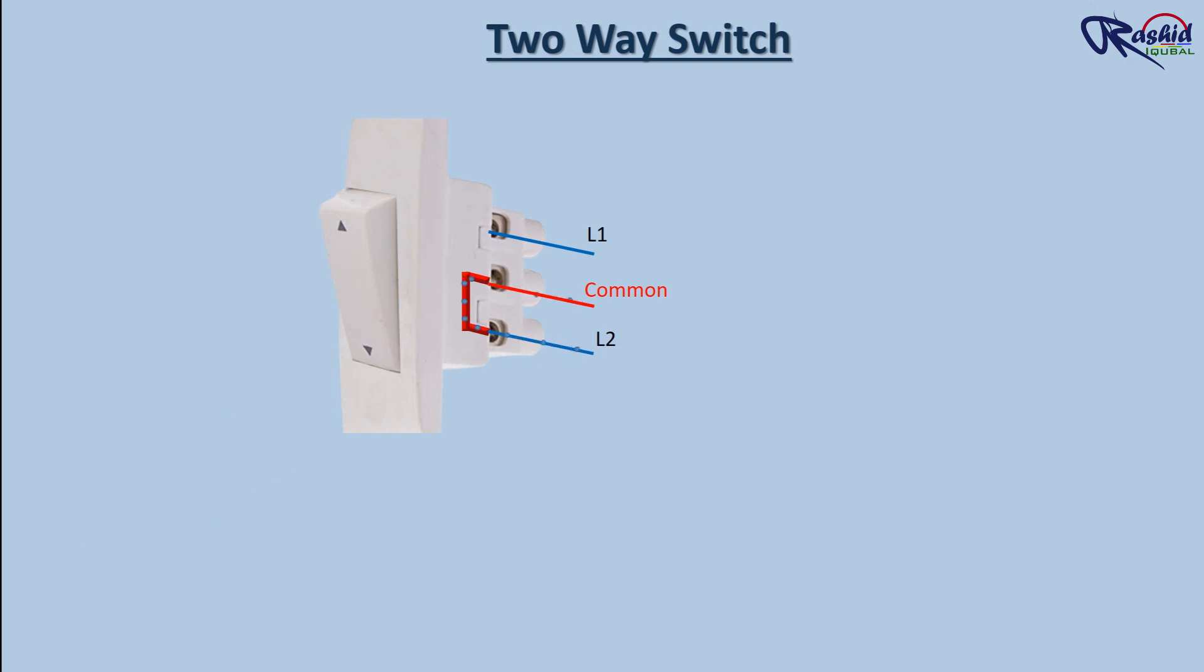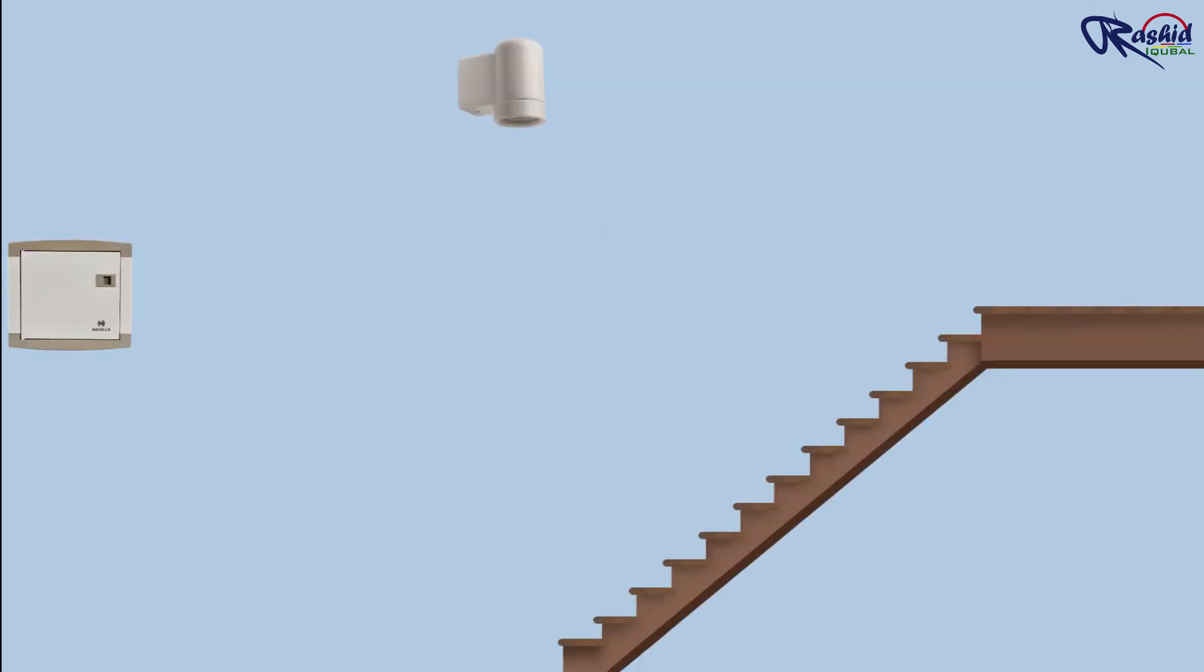Let's see an example of controlling this light fitting using two switches. I'll flip them over so you can see how this would work. Now let's start wiring. We need to connect the two switches together.